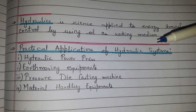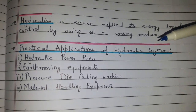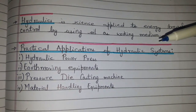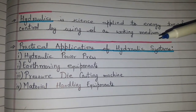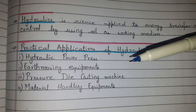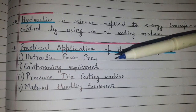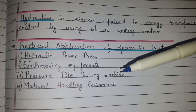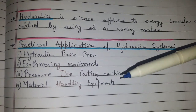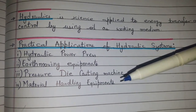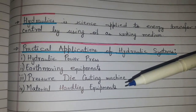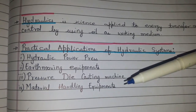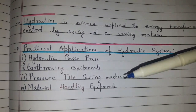Practical application of hydraulic system. There are many applications; I have listed four: hydraulic power press, earth moving equipment, pressure die casting machine, and material handling equipment. For details you can refer to my video or any other textbook.